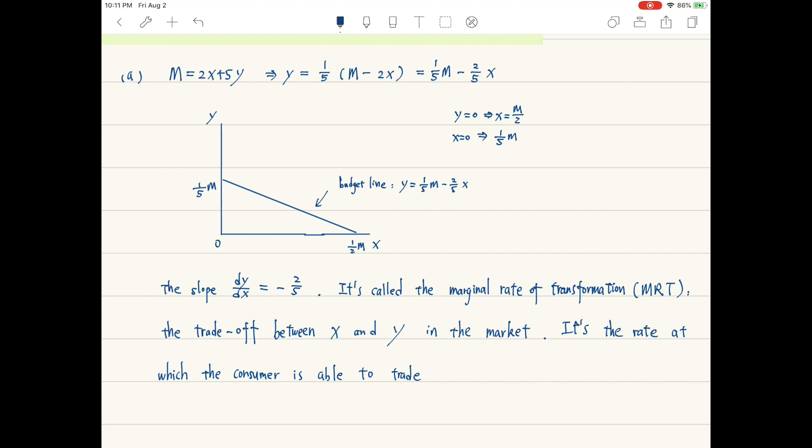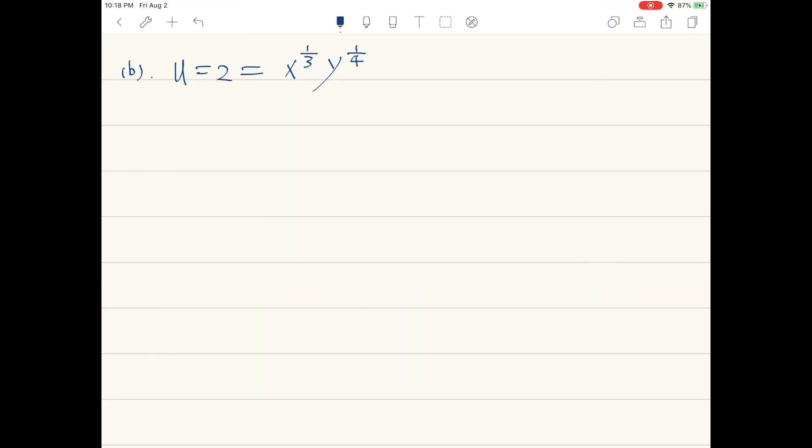It's the rate at which the consumer is able to trade y for x in the market when the prices and her income are fixed. Here the consumer must give up 2/5 units of y to obtain one more unit of x in the marketplace.